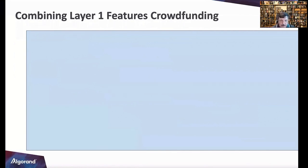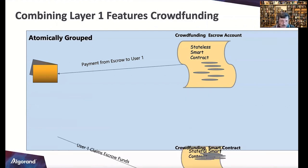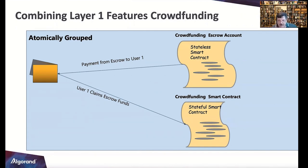Another example is crowdfunding. You raise X amount — if you don't reach the target, everyone gets their money back. We set up a crowdfunding escrow account collecting funds. Payments are atomically grouped, and a stateful smart contract compares collected funds against the target. If it's a go, we can issue products to contributors and use the funds for the invention. The orchestration is done through atomic transactions.